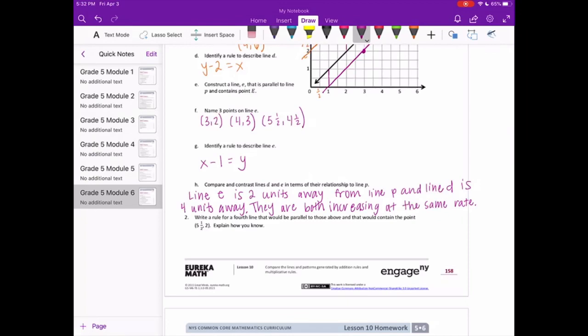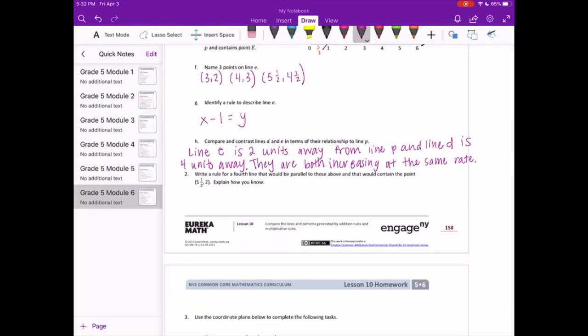Number 2, write a rule for a 4th line that would be parallel to those above and that would contain the point 5 and a half, 2. Explain how you know. So let's first find the difference between 5 and a half and 2. 5 and a half minus 2 would be equal to 2 and a half. So a rule here would be X minus 2 and a half equals Y.